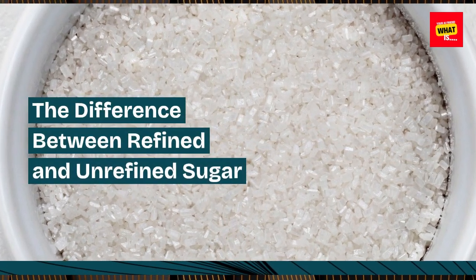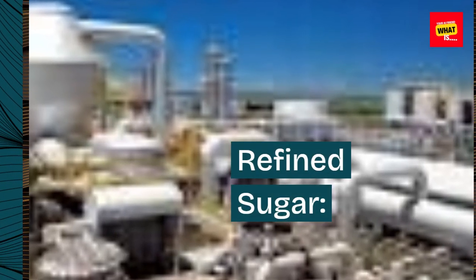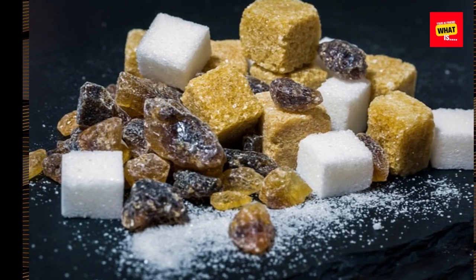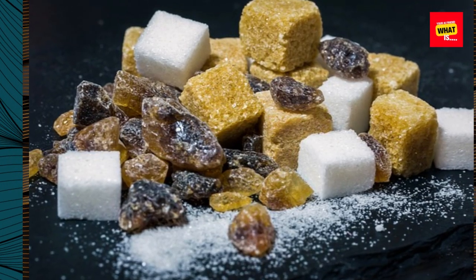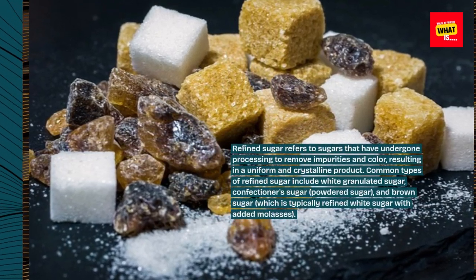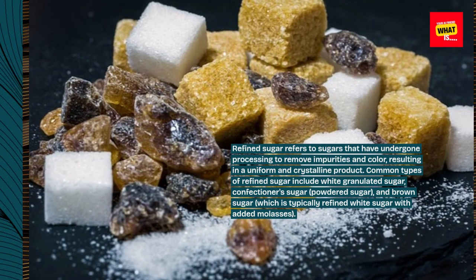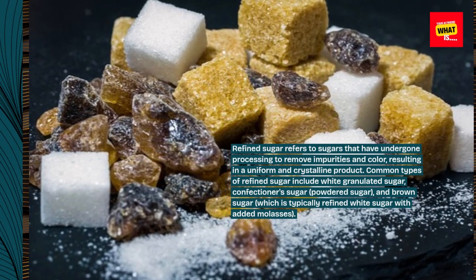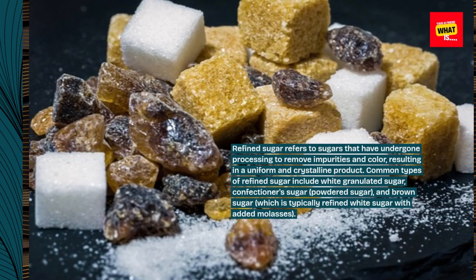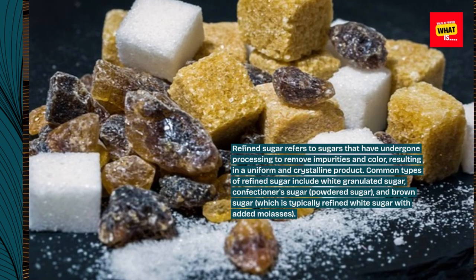The Difference Between Refined and Unrefined Sugar. Refined sugar refers to sugars that have undergone processing to remove impurities and color, resulting in a uniform and crystalline product. Common types of refined sugar include white granulated sugar, confectioner's sugar, powdered sugar, and brown sugar, which is typically refined white sugar with added molasses.